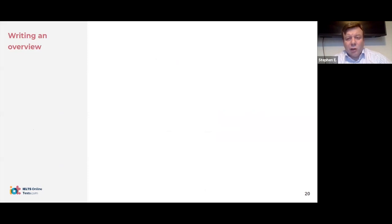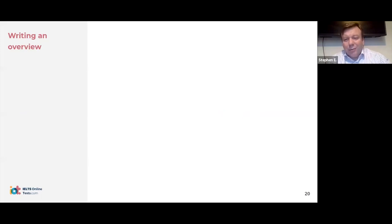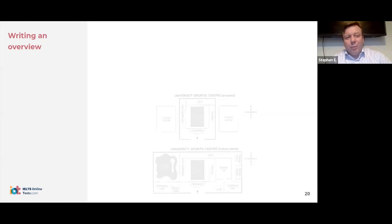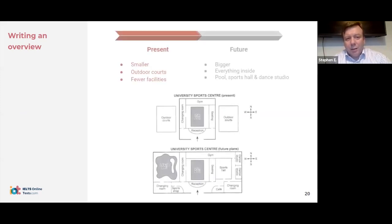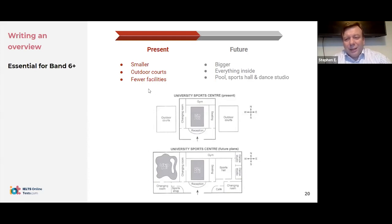Writing an overview: if you don't have an overview on your task, you won't score higher than a five. So if there's no clear overview, you've got a problem. For band six and up, you must have an overview. Our present situation is smaller, outdoor courts, fewer facilities. The future: it's going to be bigger, it's enclosed, and now we've got the new pool, sports hall, and dance studios. Essential for band six — you must have that.